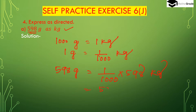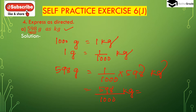This gives us 598 divided by 1000 kg. In the denominator, 1000 has three zeros, and in the numerator there are three digits, so we have to place three digits after the decimal place. It will be 0.598 kg. So 598 grams is 0.598 kg.